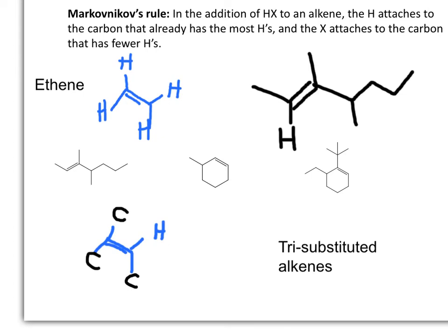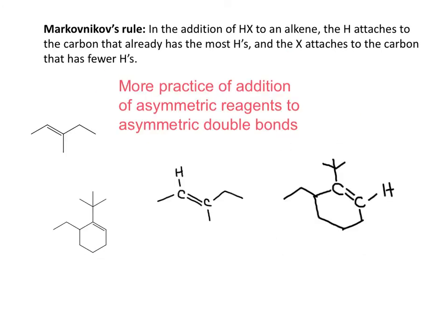Now we need to consider tri-substituted alkenes. This is a tri-substituted alkene because instead of hydrogens from the molecule of ethene, we have replaced three hydrogens with carbons — so we have three carbons in those positions. When following the Markovnikov rule, the carbon that has more hydrogens will gain one hydrogen. Before you do electrophilic addition to the family of alkenes, if you still need to see the hydrogens and you have skeletal structures, write the hydrogens around the carbon-carbon double bond to make sure you are not missing the answer.